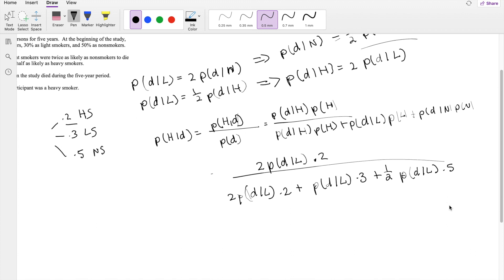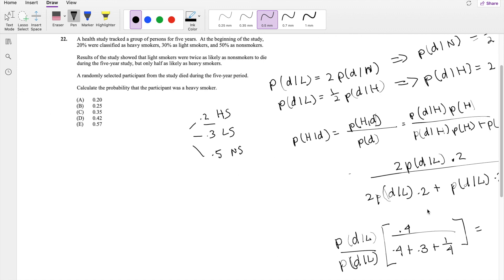So I can actually factor out the probability of D given L outside, and you get it on the top and the denominator, right? So you get 2 times 0.2, that's 0.4, divided by 0.4 plus 0.3 plus one-fourth. 0.4 divided by 0.95, approximately equal to 0.421, which is our answer D.